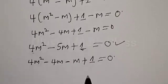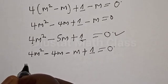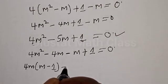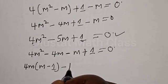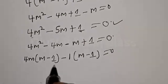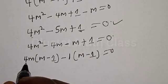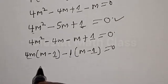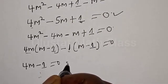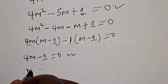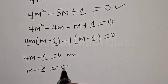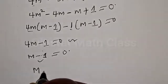Factoring: 4m into (m minus 1) minus 1 into (m minus 1) equals 0, giving us (4m minus 1)(m minus 1) equal to 0. There are two cases: 4m minus 1 equal to 0, or m minus 1 equal to 0.